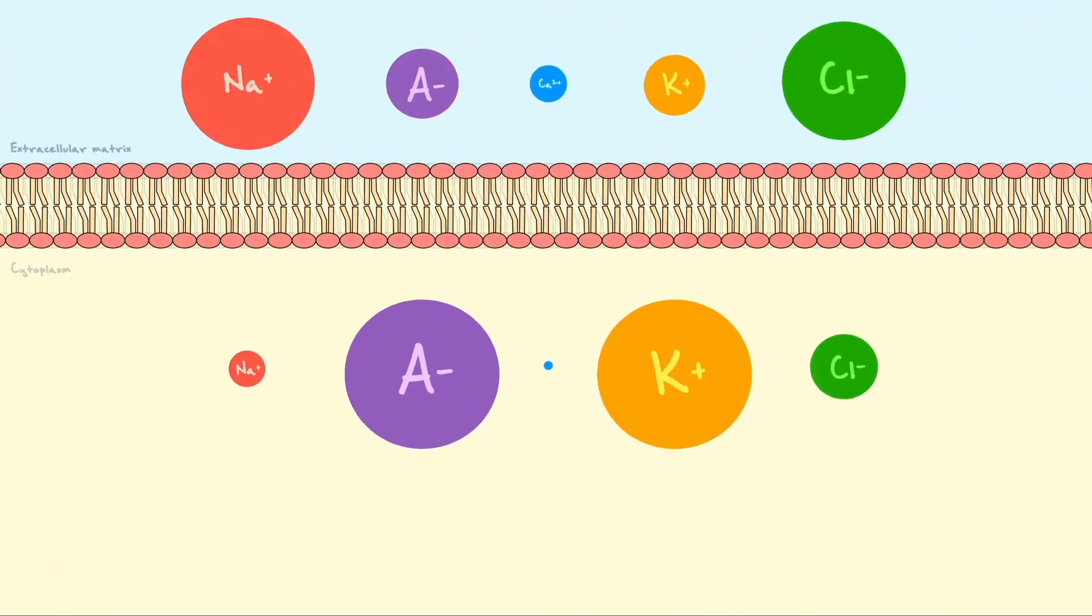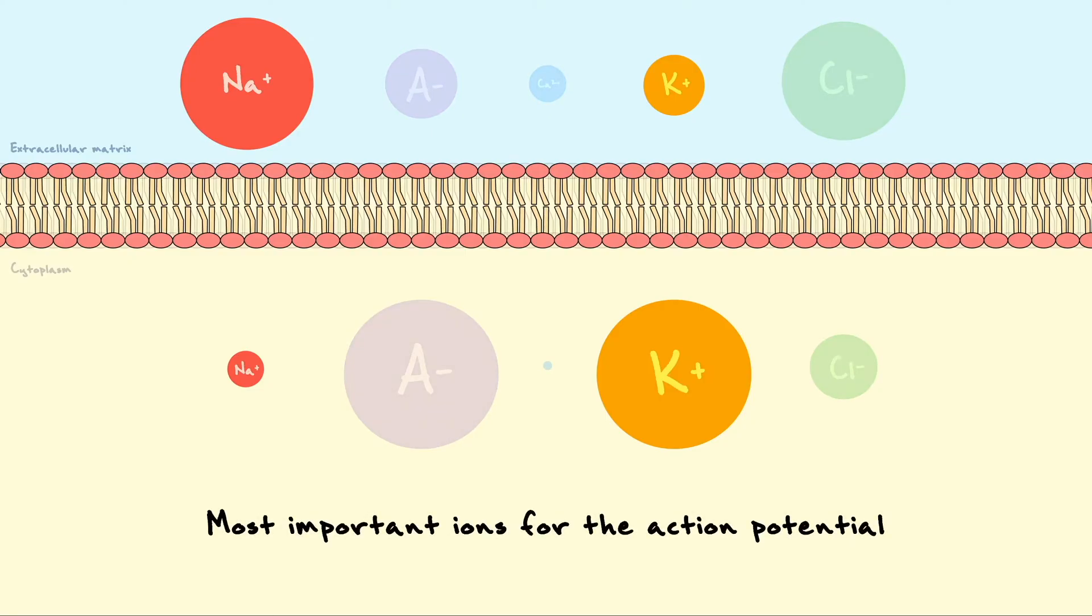Now, an important detail we have not discussed yet is how exactly do the ions end up distributed the way they are, and most importantly, how is this distribution maintained across the membrane. As you will see throughout this video, the most important ions when it comes to signaling and conducting the action potential are potassium and sodium. For that reason, let's first cover what mechanisms the cell uses to separate these two ions.